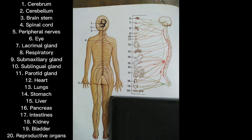The nervous system components are labeled as follows: 1. Cerebrum, 2. Cerebellum, 3. Brainstem, 4. Spinal cord, 5. Peripheral nerves, 6. Eye, 7. Lacrimal gland, 8. Respiratory, 9. Submaxillary gland, 10. Sublingual gland, 11. Parotid gland, 12. Heart, 13. Lungs, 14. Stomach, 15. Liver, 16. Pancreas, 17. Intestines, 18. Kidney, 19. Bladder, 20. Reproductive organs.